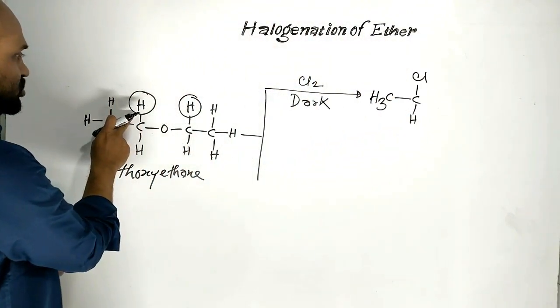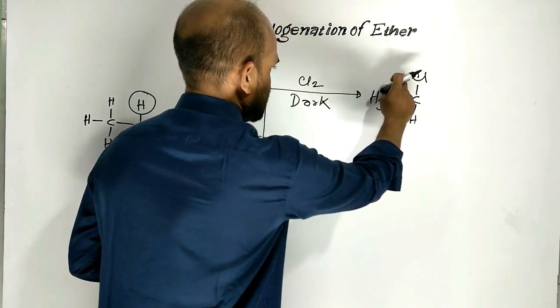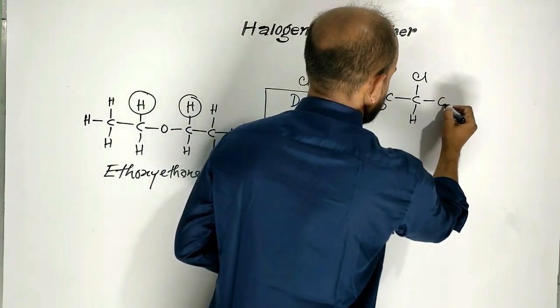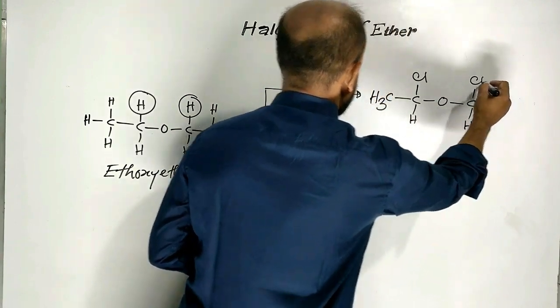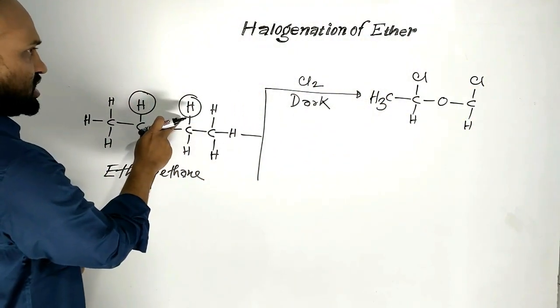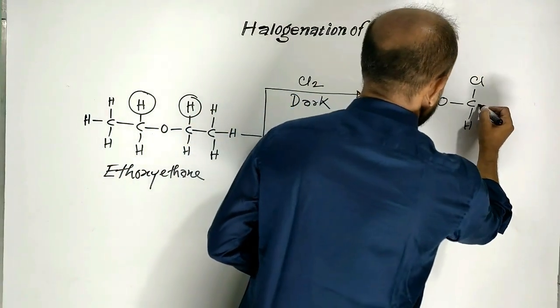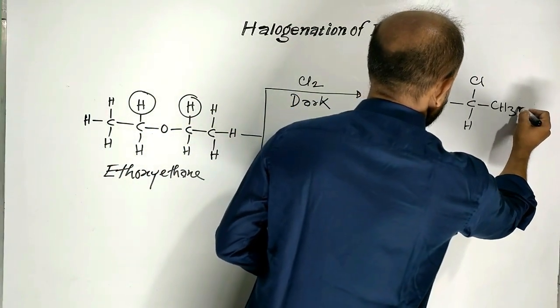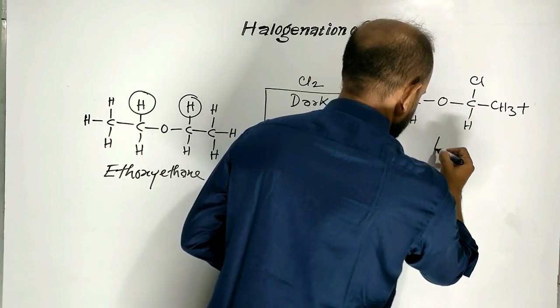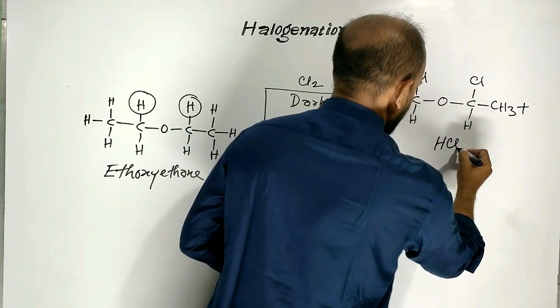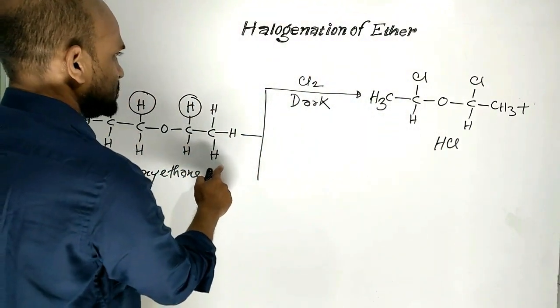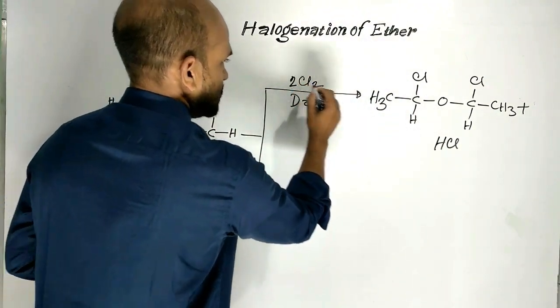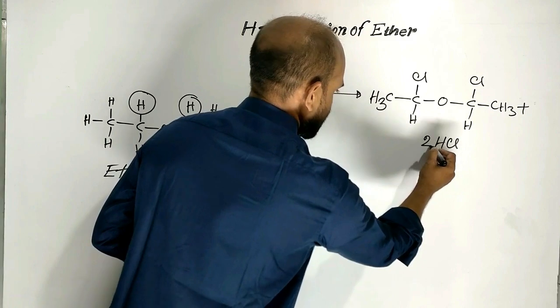This hydrogen atom is replaced by chlorine. Then here, again, this hydrogen atom is replaced by chlorine. Here, HCl is formed as byproduct. If we balance the chemical reactions, then here too. Here we will get two.